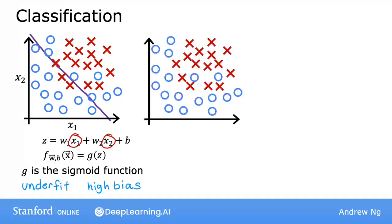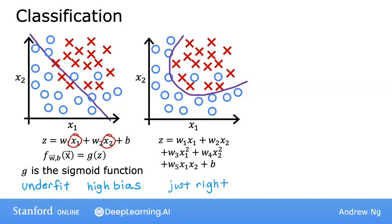Let's look at another example. If you were to add to your features these quadratic terms, then z becomes this new term in the middle. And the decision boundary, that is where z equals zero, can look more like this, more like an ellipse or part of an ellipse. And this is a pretty good fit to the data, even though it does not perfectly classify every single training sample in the training set. Notice how some of these crosses get classified among the circles. But this model looks pretty good. I'm going to call it just right, and it looks like this will generalize pretty well to new patients.